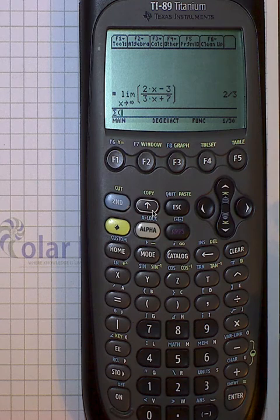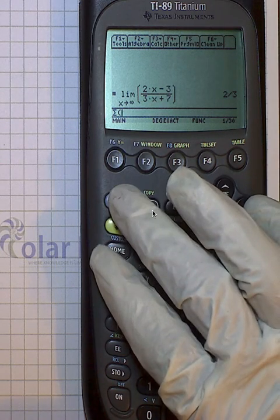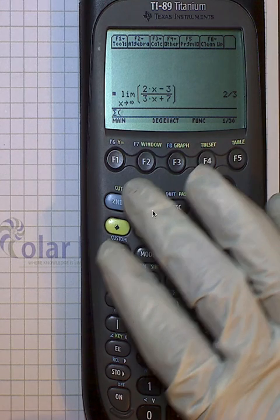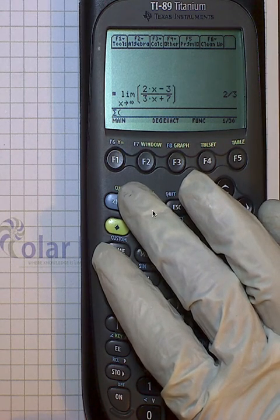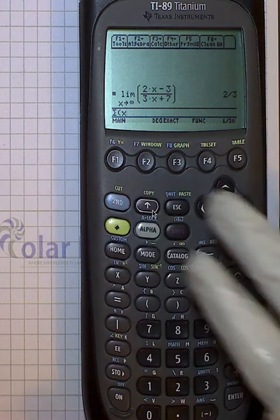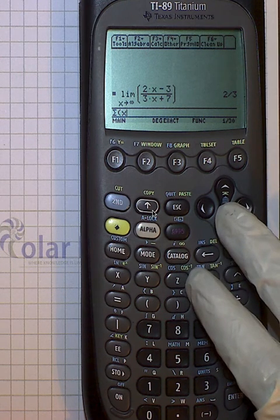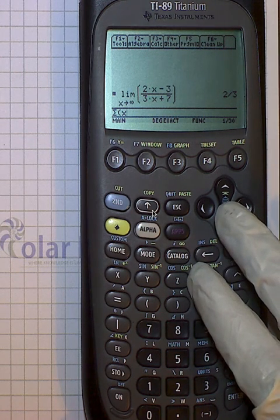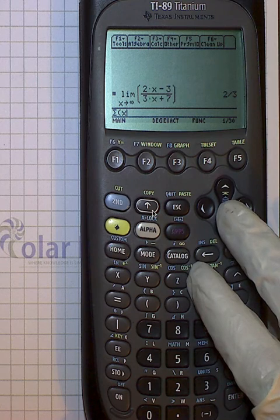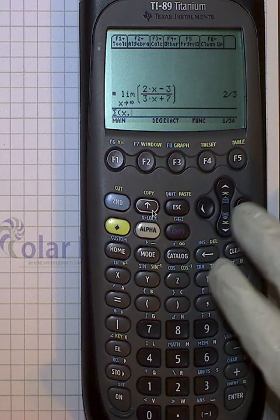So if we want to find the sum of the first five integers, we need to first tell it what variable to put inside of sigma, and this time we can use x, although normally if you're using sigma, you prefer to use the variables i or k, and that's how most books are written.